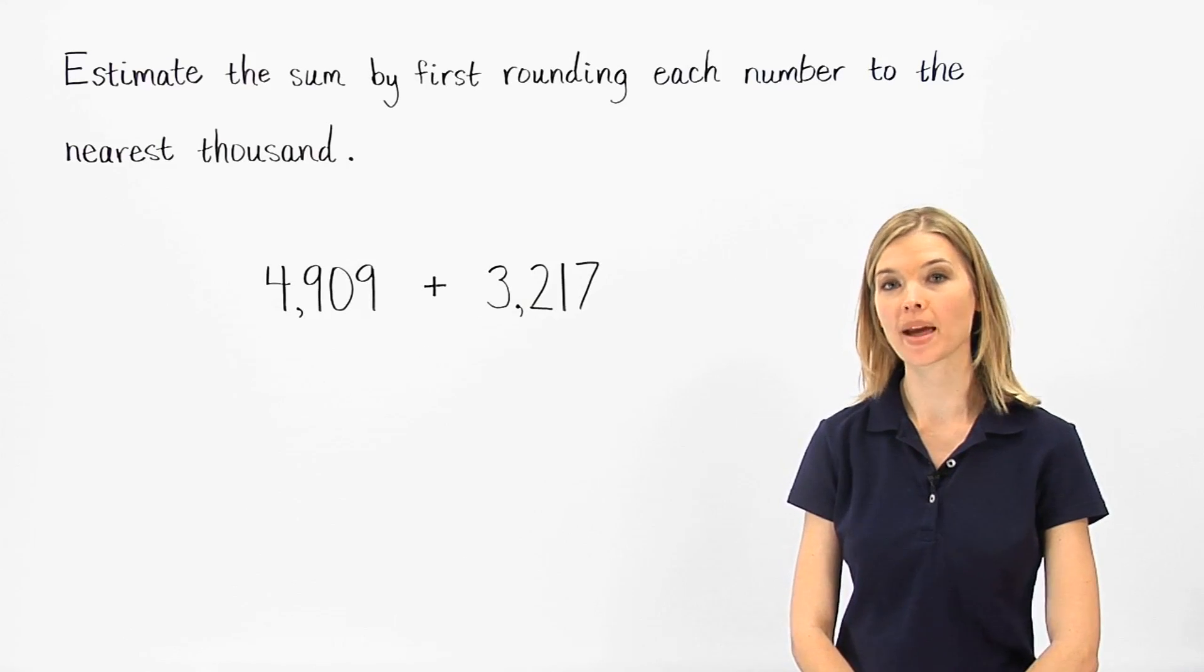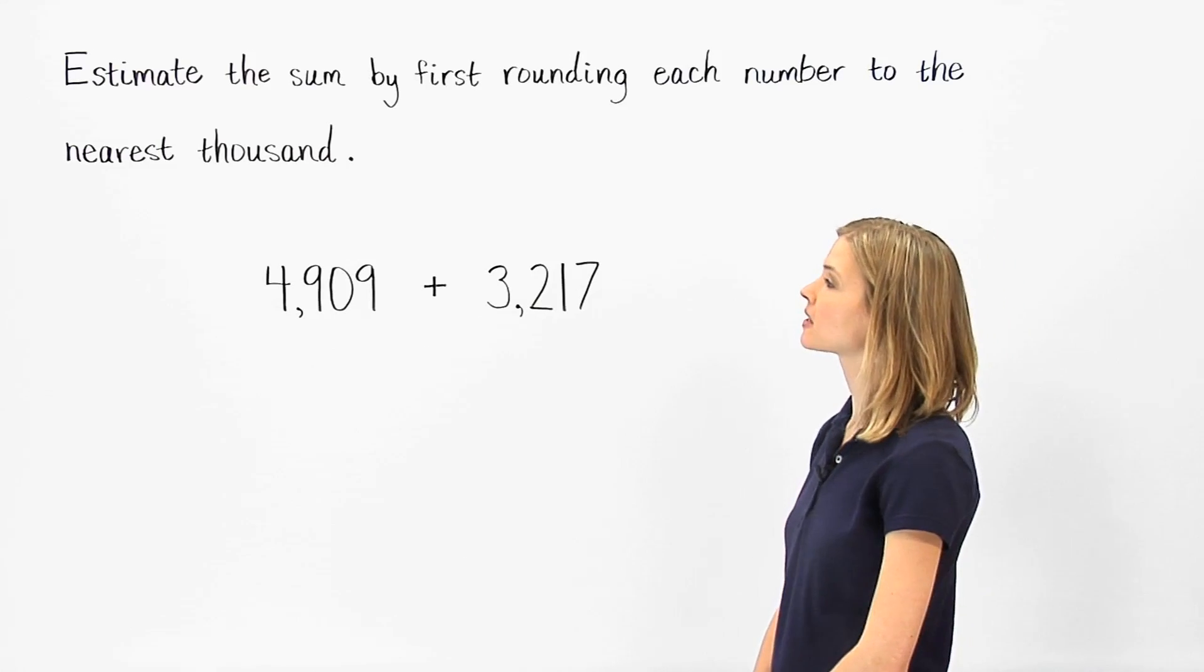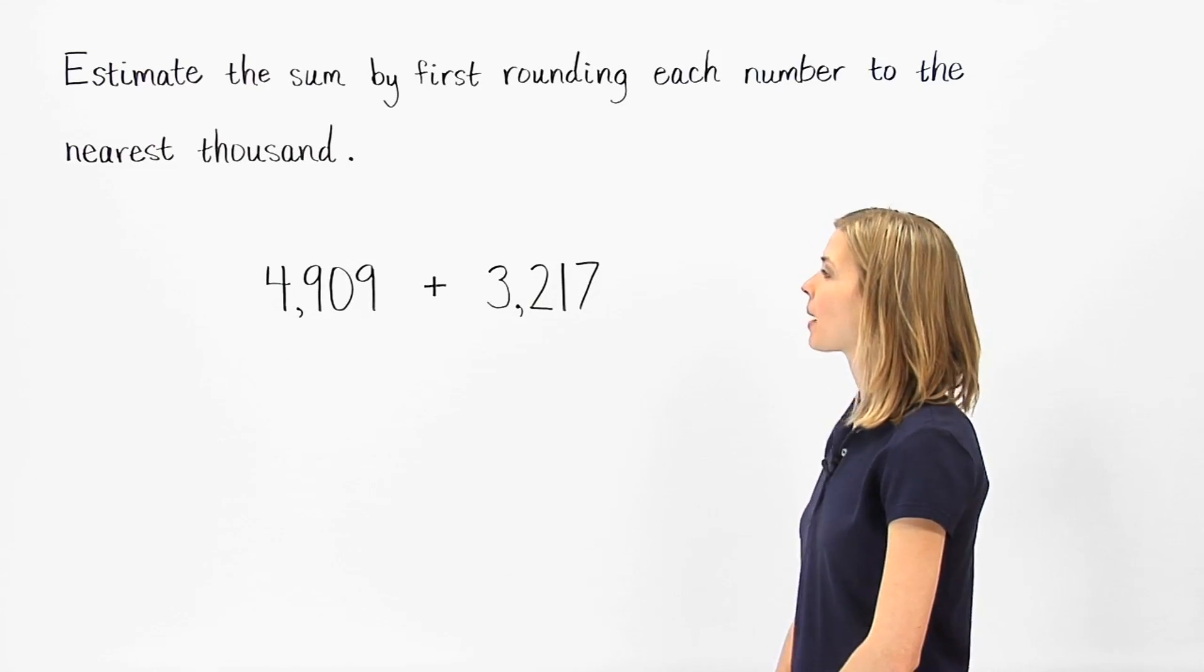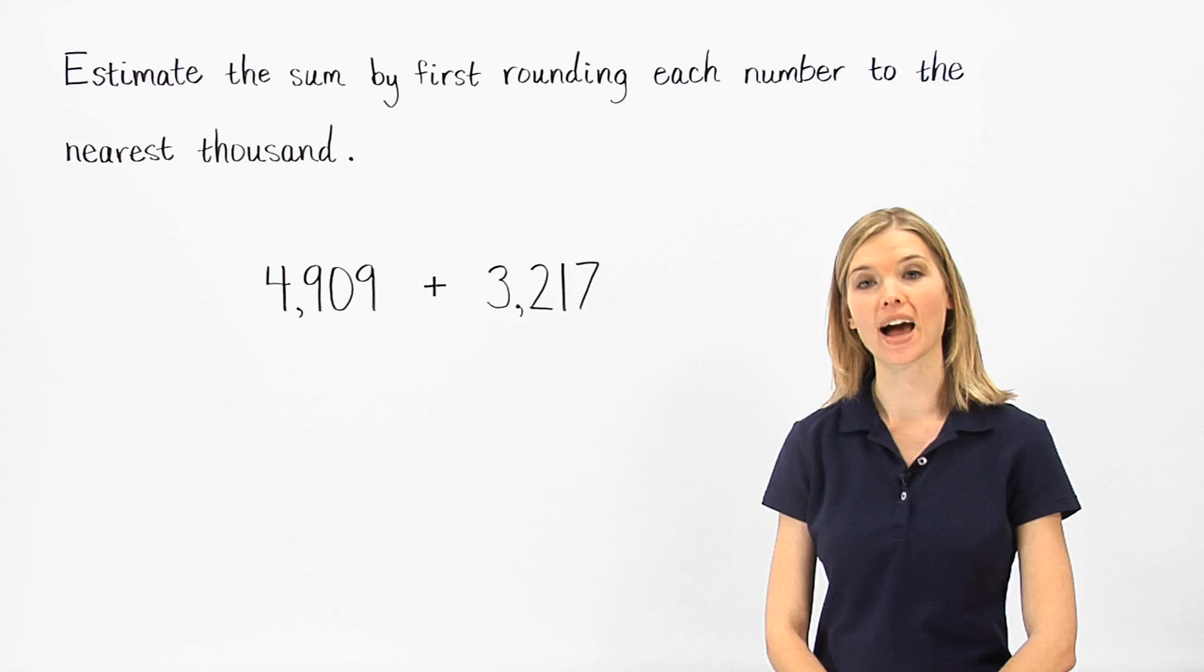Here, we're asked to estimate the sum of 4,909 and 3,217 by rounding each number to the nearest thousand.